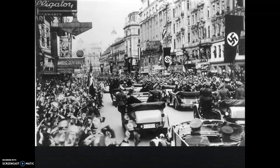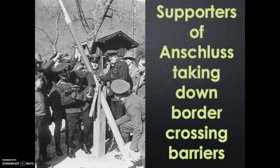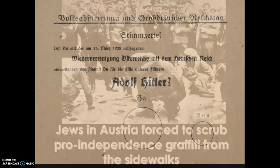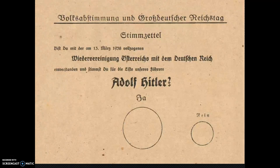On March 12th, German troops entered Austria, to a triumphant crowd in some places, as seen here. On March 13th, Austria was annexed to Germany. A plebiscite in April supposedly confirmed that 99% of Austrians supported the Anschluss, or unification. You can see the ballot here, though.